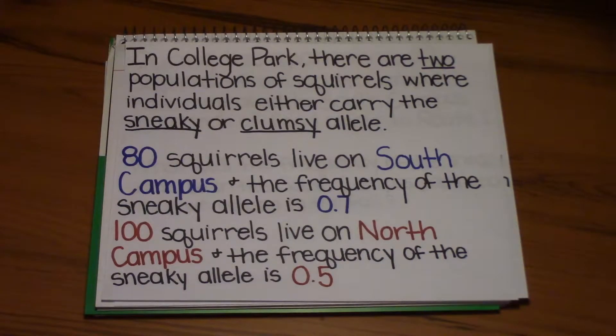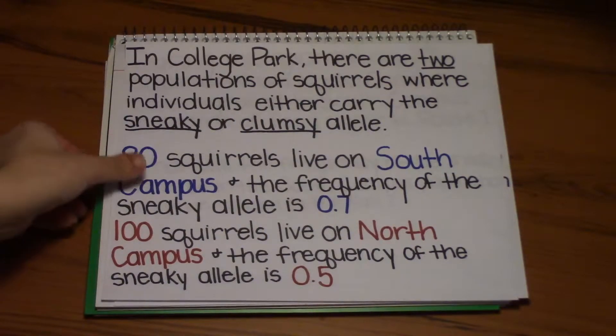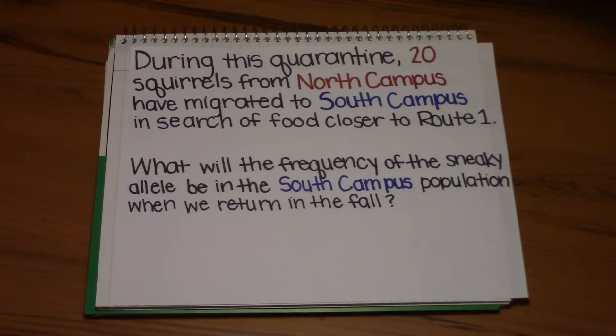So our problem today reads like this. In College Park, there are two populations of squirrels where individuals either carry the sneaky or the clumsy allele. 80 squirrels live on south campus, and the frequency of the sneaky allele is 0.7. 100 squirrels live on north campus, and the frequency of the sneaky allele there is 0.5. During this quarantine, 20 squirrels from north campus have migrated to south campus in search of food closer to route 1. So what will the frequency of the sneaky allele be in the south campus population when we return to campus in the fall, if and when.